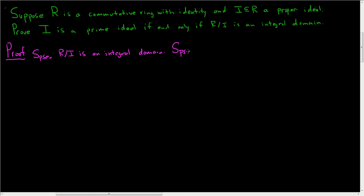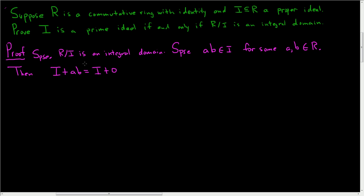Suppose that ab is in I for some a, b in our ring, and we have to show that a is in I or b is in I — that will prove that I is a prime ideal. Now the fact that ab is in I means that the coset I plus ab is equal to I plus zero, where I plus zero is the identity element of the additive group of the quotient ring — so this is the zero element in the quotient ring.